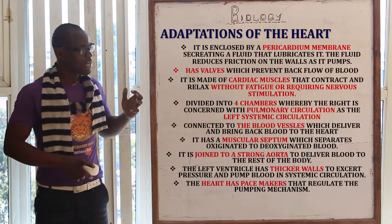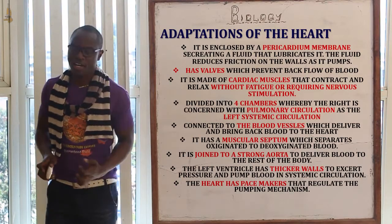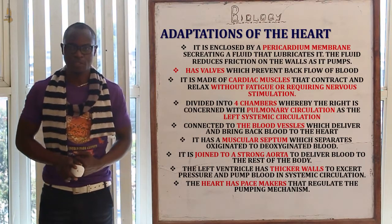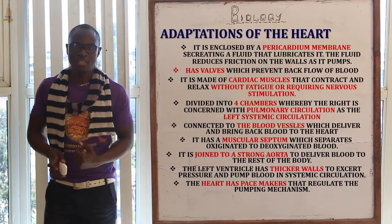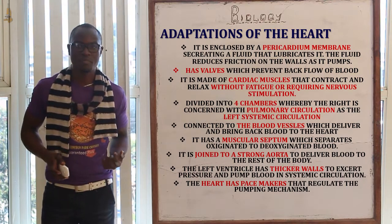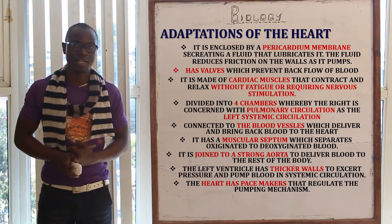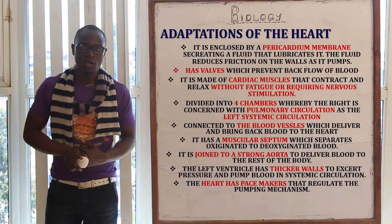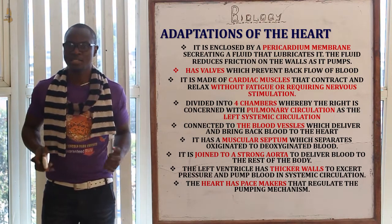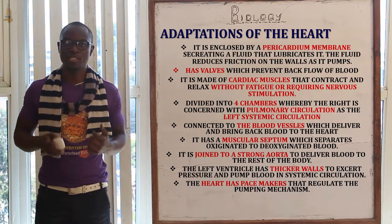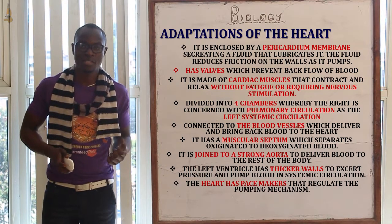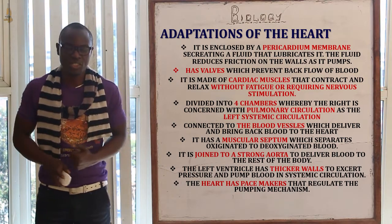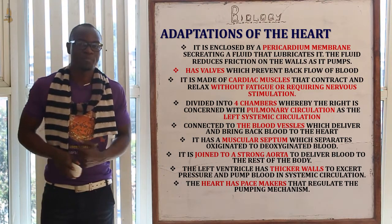What are the adaptations of the heart to its function? The first adaptation is that it is enclosed by a strong pericardium membrane which mainly secretes a fluid that lubricates it as it continuously pumps blood.